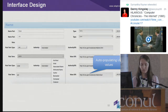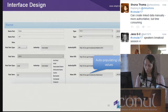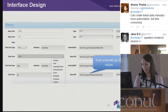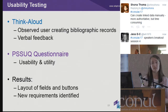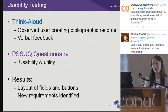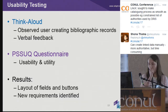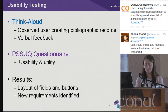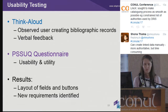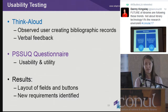You can also see the automatic populating of URI values based on your selection for the author. Once we completed the interface, we did some usability testing. This consisted of a think-aloud observation — I asked Marta to use the tool and provide verbal feedback — and I observed whether she encountered any difficulties. We also asked her to complete a questionnaire measuring usability and utility. In the results, we found that some layout, fields, and buttons needed to be made clearer and more streamlined. We also identified new requirements, such as providing interlinking rather than just publishing RDF.